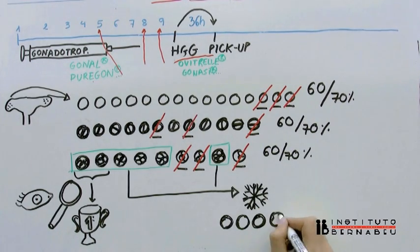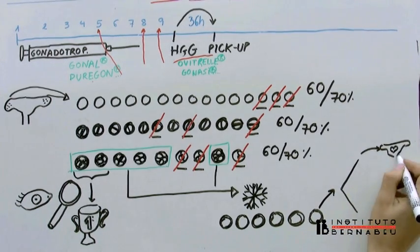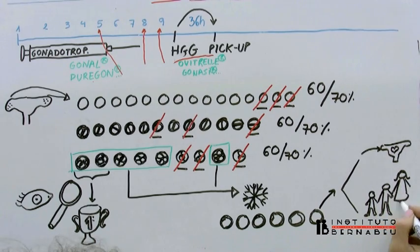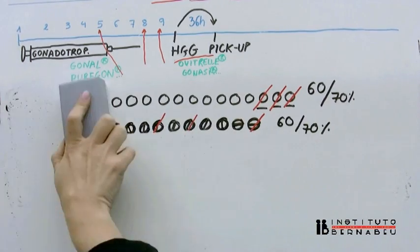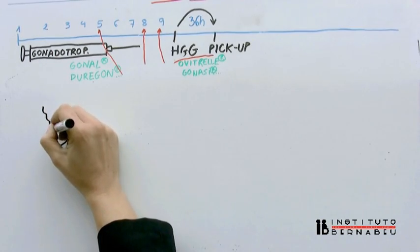Secondly, it allows for the possibility of being able to freeze suitable embryos for future transfers using a technique called vitrification. This avoids all the previous process of stimulation, collection, and embryo culture for a new attempt in the event of the first cycle failing or if you would like other children in the future.